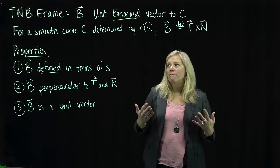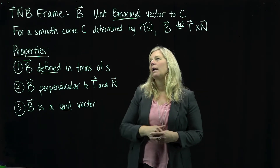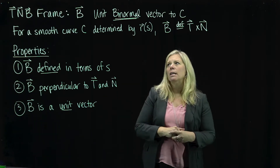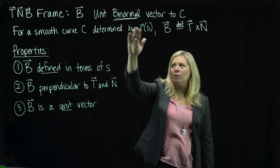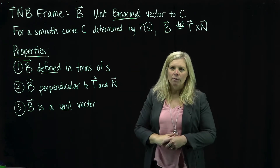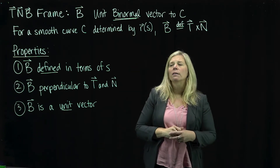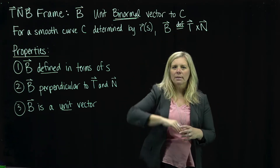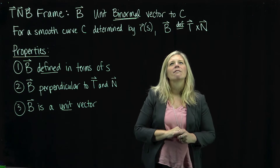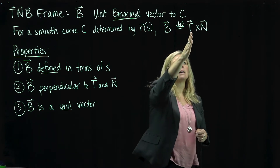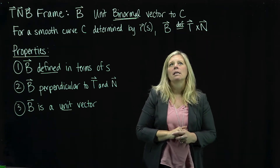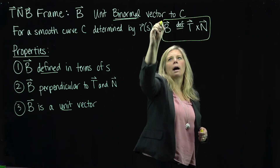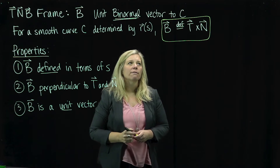We're going to look at the B vector, the third vector in our TNB frame. The B vector is called the unit binormal vector — that's what the B stands for, binormal vector to the curve. The B vector is defined as T cross N. That's something you will need to make sure you know.